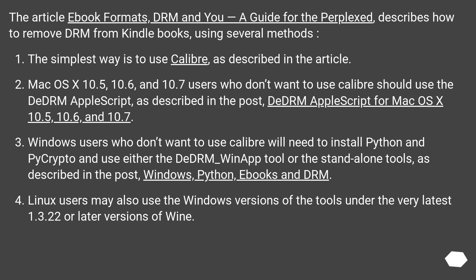Windows users who don't want to use Calibre will need to install Python and PyCrypto and use either the DeDRM WinApp tool or the standalone tools, as described in the post 'Windows, Python, eBooks, and DRM'. Linux users may also use the Windows versions of the tools under the very latest versions of Wine.